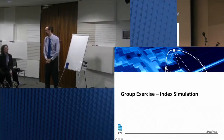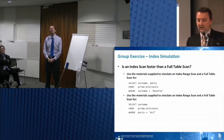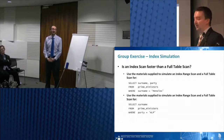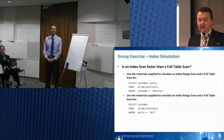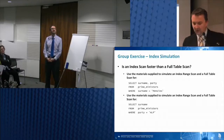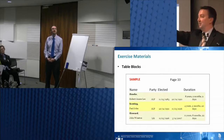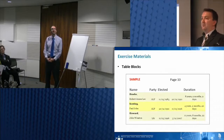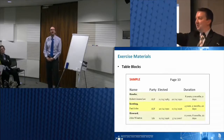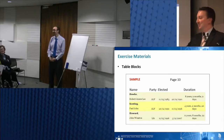For the group exercise, what we're going to do is simulate an index. I've got a couple of SQL statements here. Have a look at those. Select surname, party from Prime Ministers where surname equals Menzies - we're going to use an index on surname. And select surname from Prime Ministers where party equals ALP - I've got another index on party. I'm going to hand out to the first and second row of the audience here. These are blocks in a table. Row one and row two on this side of the audience, you're the table, and each one of you is a block in the table.